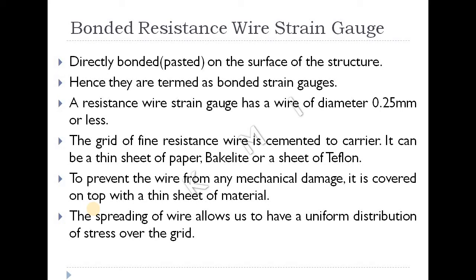The bonded resistance wire diameter is 25 micrometers or less. There are three layers in the bonded strain gauge: a Teflon sheet, the strain gauge element itself, and a cover layer. There is a mechanical wire covering to prevent the wire from any mechanical damage. It is covered on top with a thin sheet of material. The wire arrangement allows uniform distribution of stress over the grid.